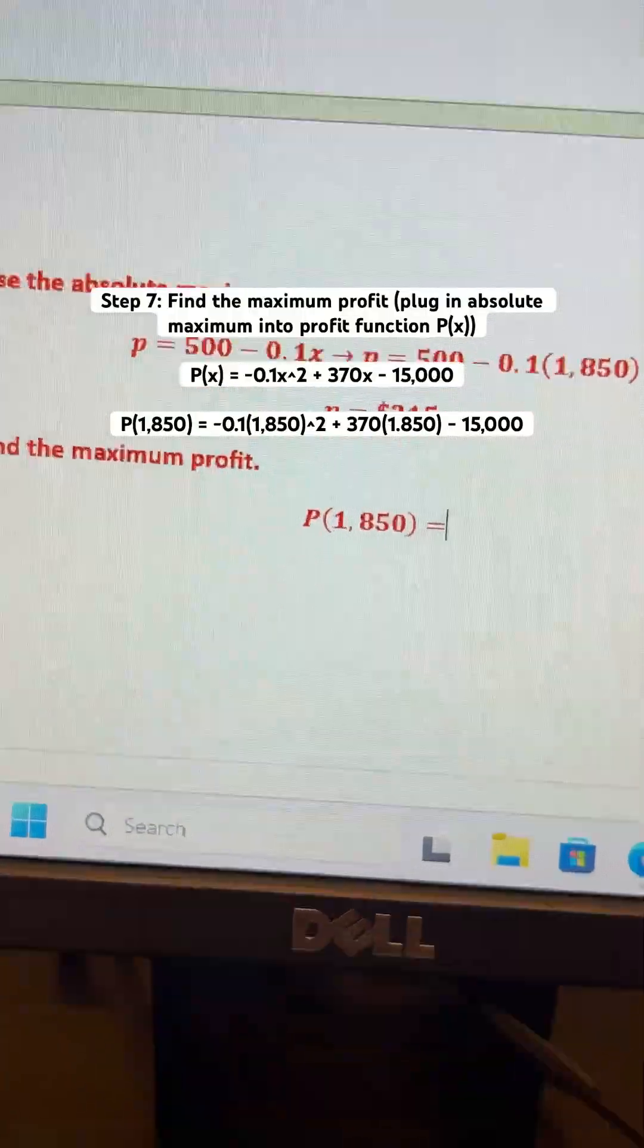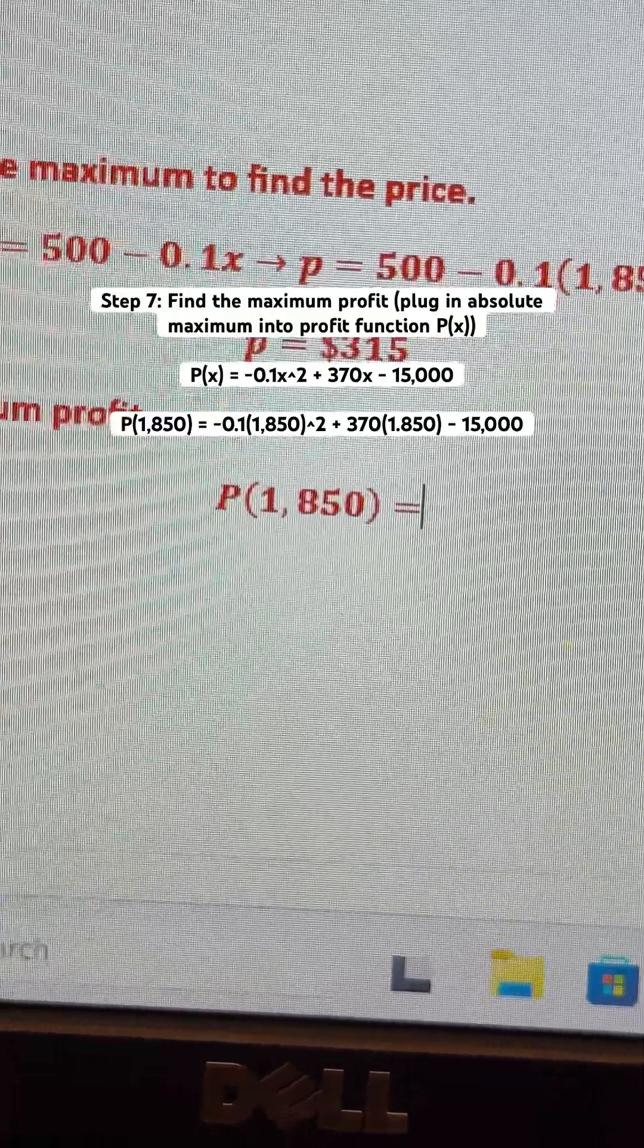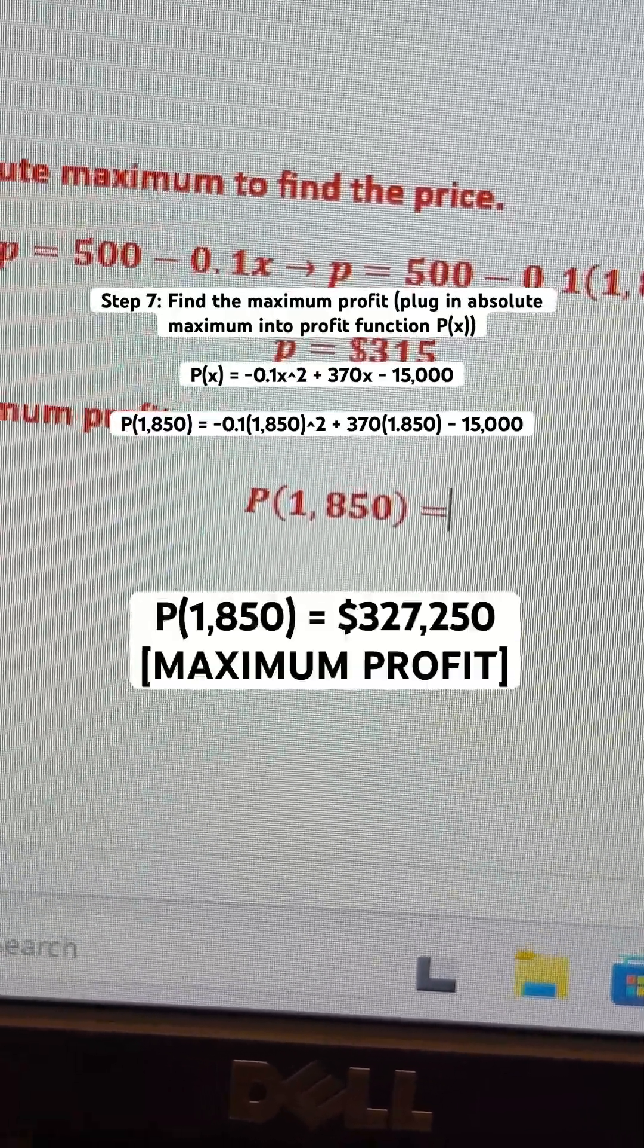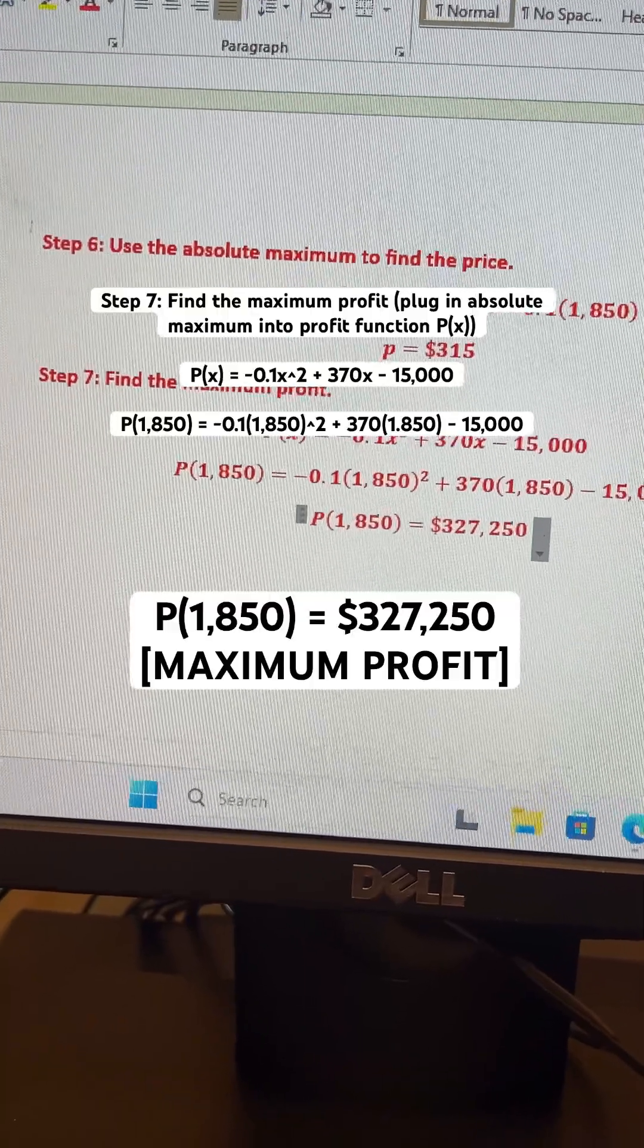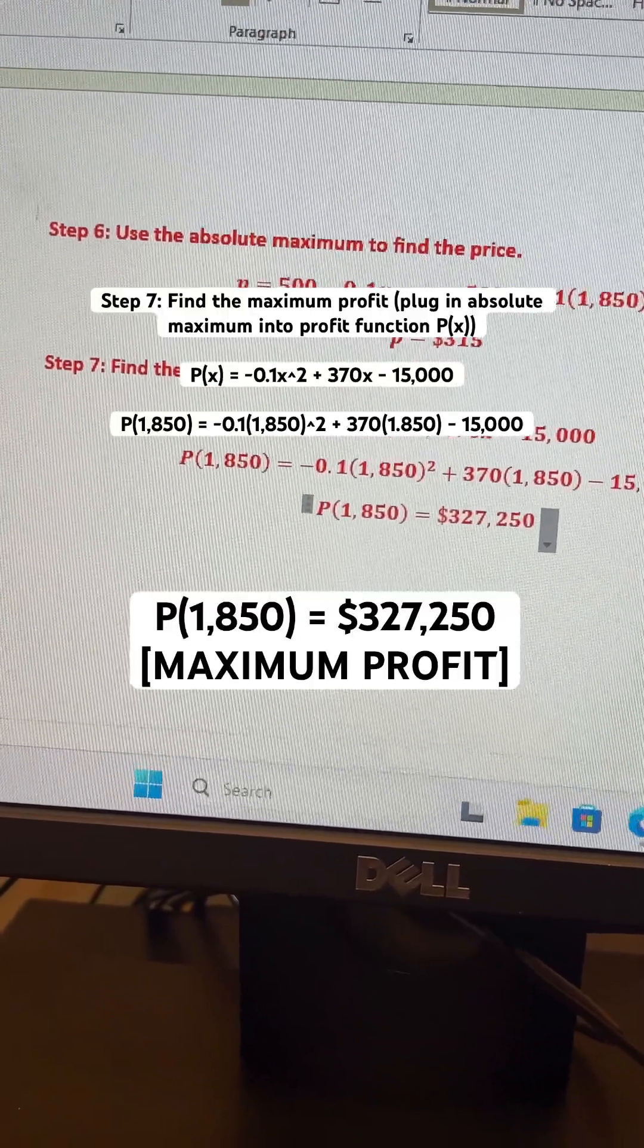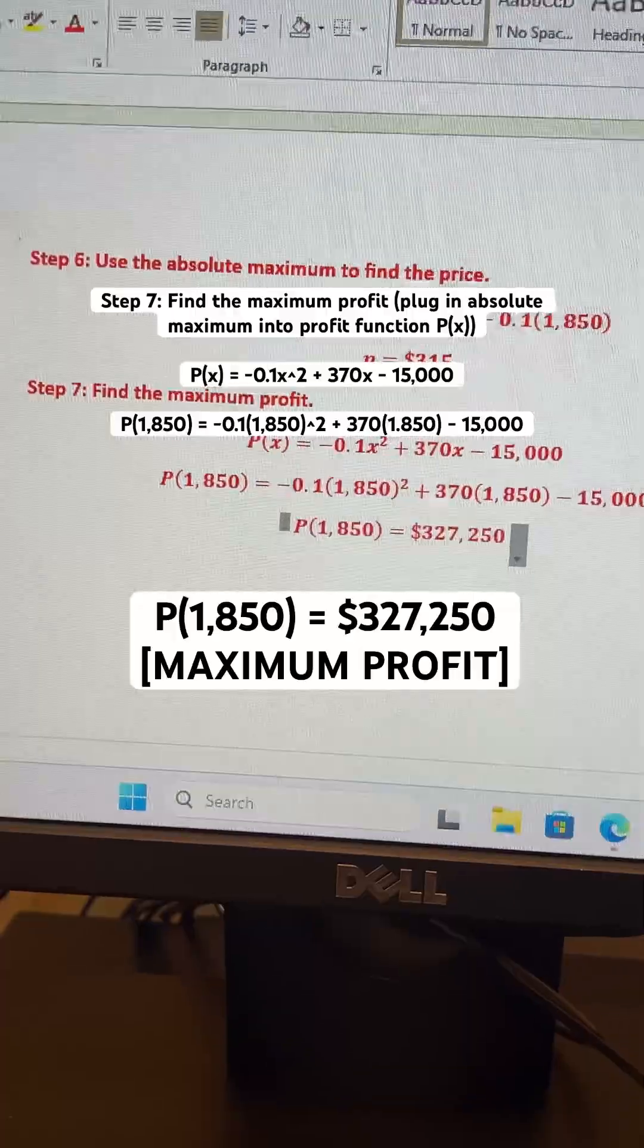To find maximum profit, we've got to plug in our absolute maximum into our profit function. We've got P(1850) is equal to $327,250. So that is our maximum profit.